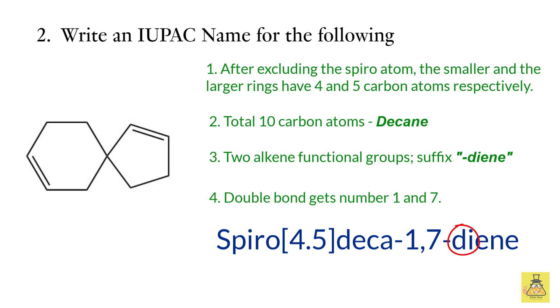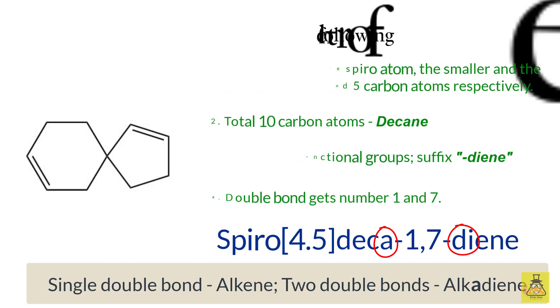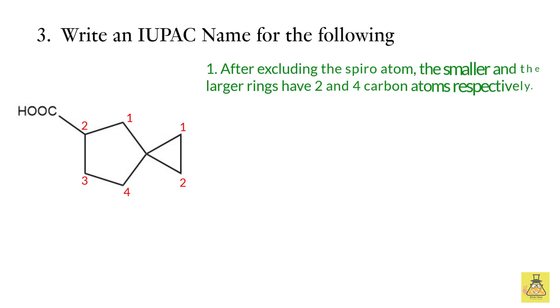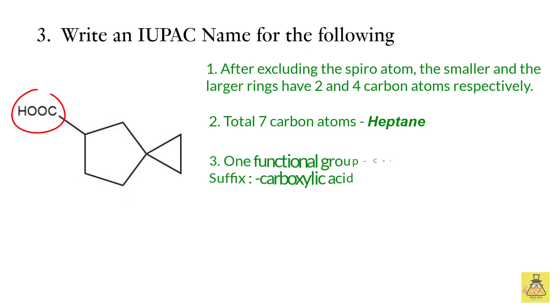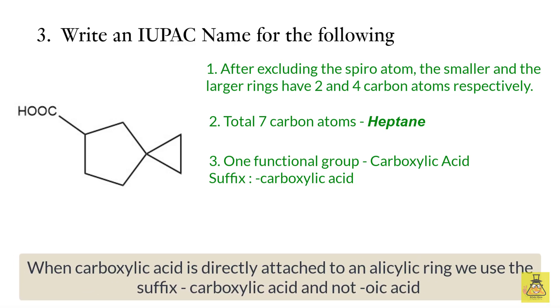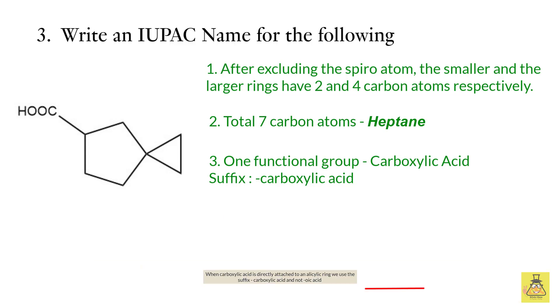Let's bring in another example. Here after excluding the spiro atom, we have two and four carbon atoms in both the rings. Our total number of carbon atoms are seven, hence our parent is heptane. We have one functional group that is a carboxylic acid, for which I will use the suffix carboxylic acid and not oic acid, as the carbon atom of the acid is not a part of the parent. Although you will also find in some books that they use the suffix oic acid in such cases, but I won't really suggest you to do so. We start the numbering from the smaller ring, and thus carboxylic acid is present at position five. Finally, when we write the name, the name is spiro[2.4]heptane-5-carboxylic acid.